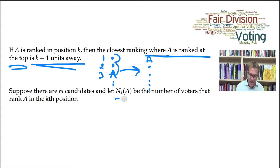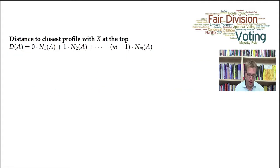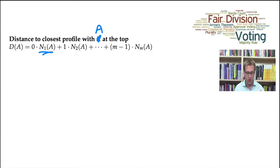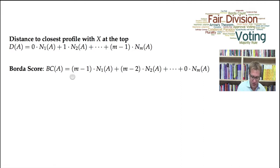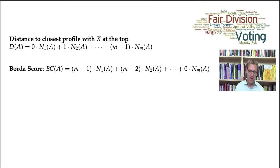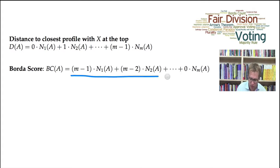Suppose there are M candidates and let N_K(A) denote the number of voters that rank A in the K-th position. The distance to the closest profile with A at the top is: 0 × N_1(A) + 1 × N_2(A) + 2 × N_3(A) + ... + (M−1) × N_M(A). As a reminder, the Borda score assigns M−1 points to candidates ranked first, M−2 points to candidates ranked second, all the way down to 0 points to candidates ranked last. That is how you calculate the overall Borda score.